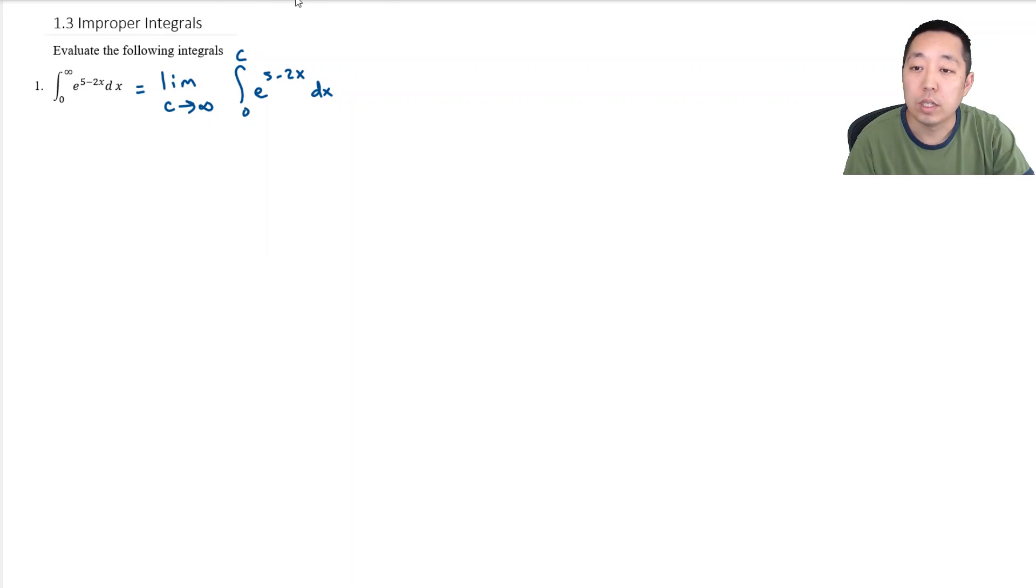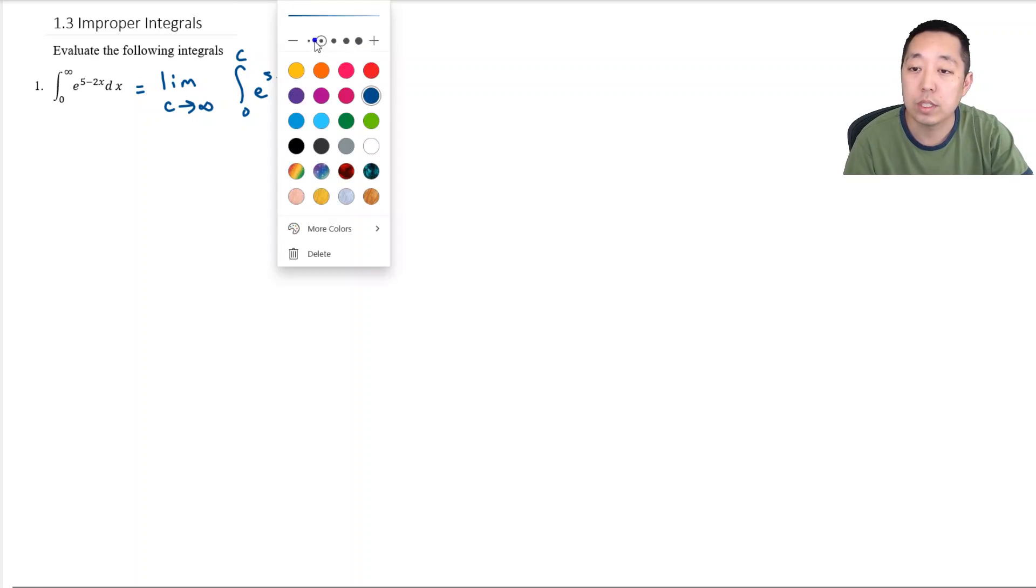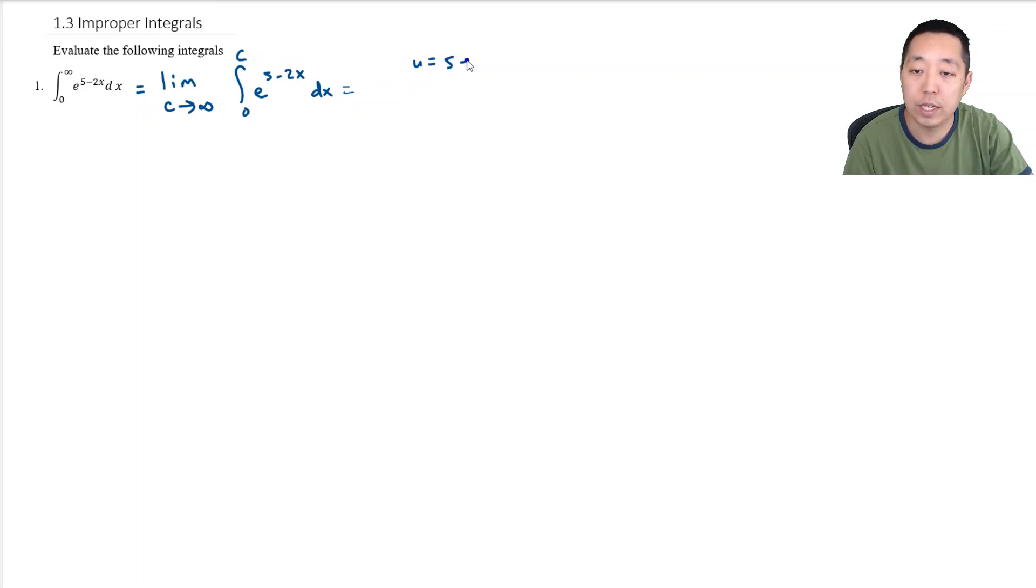Let me shrink this a little bit. How are we going to do this integral? We can do a u substitution. u equals 5 minus 2x, du equals negative 2 dx.